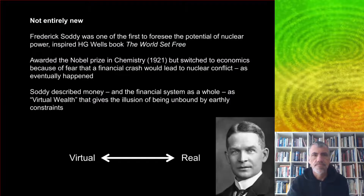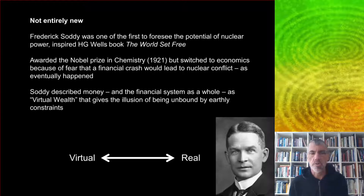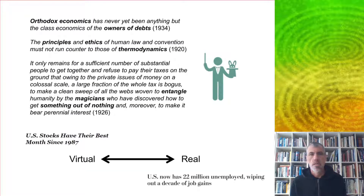These concerns about the financial system are not exactly new. One person to raise them was Frederick Soddy, who was awarded the Nobel Prize in Chemistry in 1921 but switched to economics because of his fear that a financial crash would lead to nuclear conflict — as eventually did happen, with the Great Depression being followed by the rise of the Nazi party and World War II. Soddy described money and the financial system as a whole as a virtual wealth that gives the illusion of being unbound by earthly constraints. He saw orthodox economics as justifying this debt system, and believed we had to align human law and convention with the needs of thermodynamics.